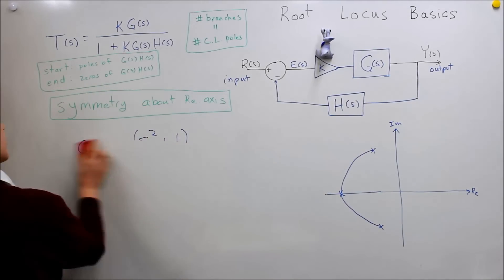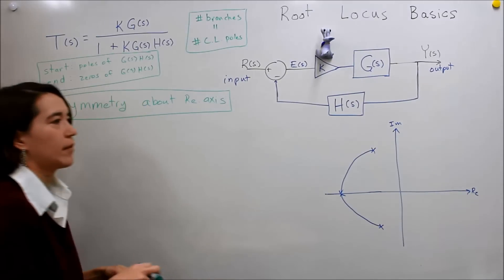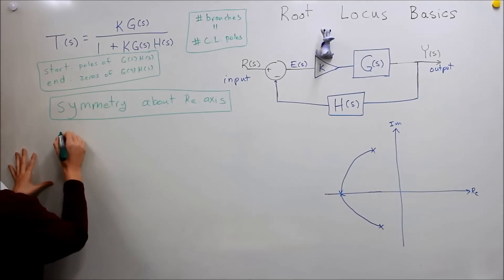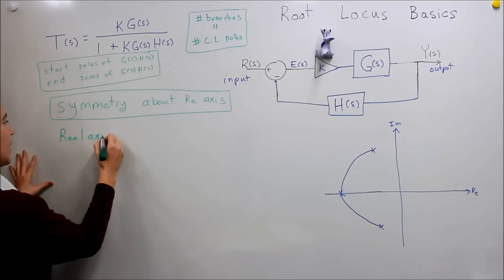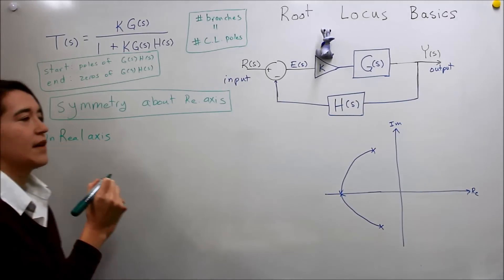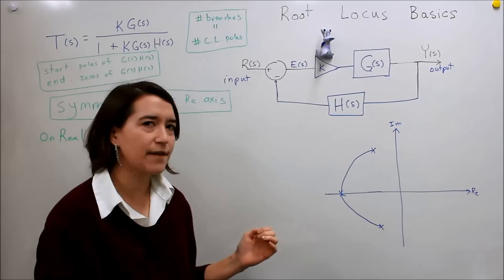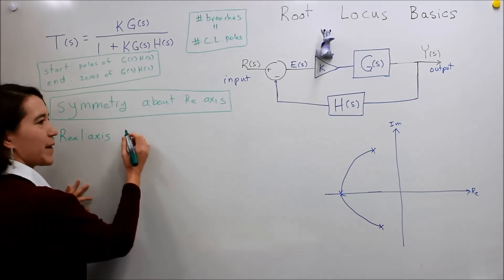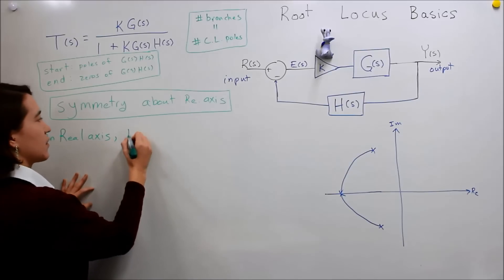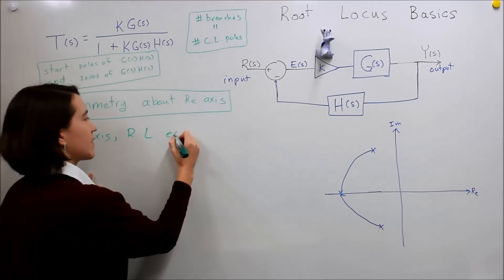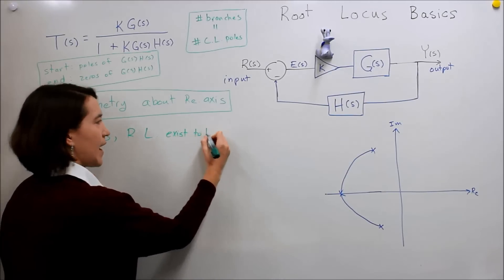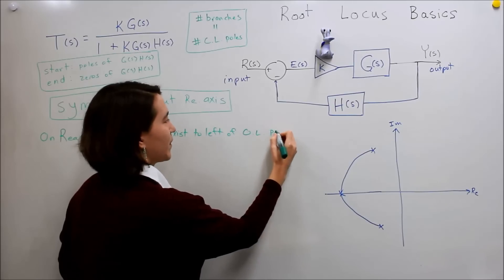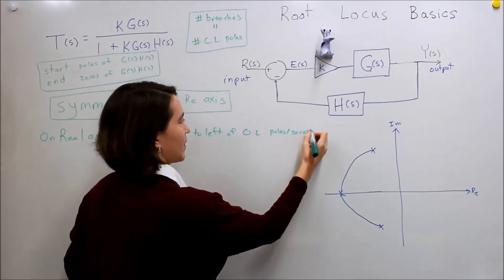The second point for this video: on the real axis, the root locus exists to the left of an odd number of open-loop poles or zeros. I'll write it and then explain it. On the real axis, the root locus — RL — exists to the left of open-loop, OL, poles or zeros.